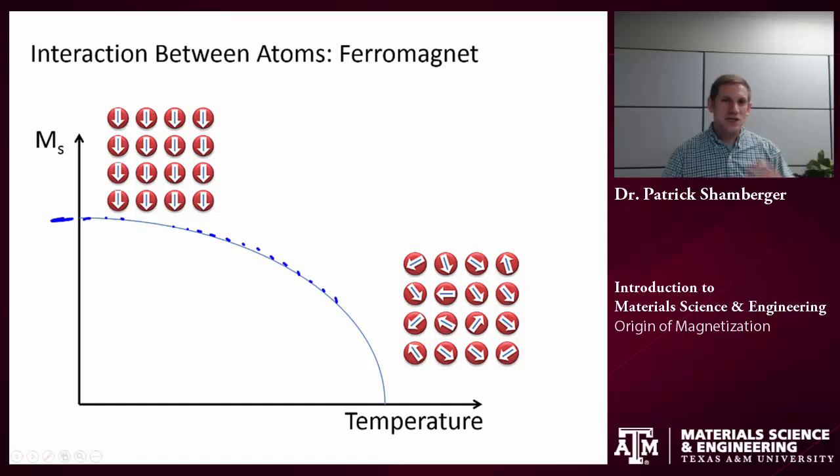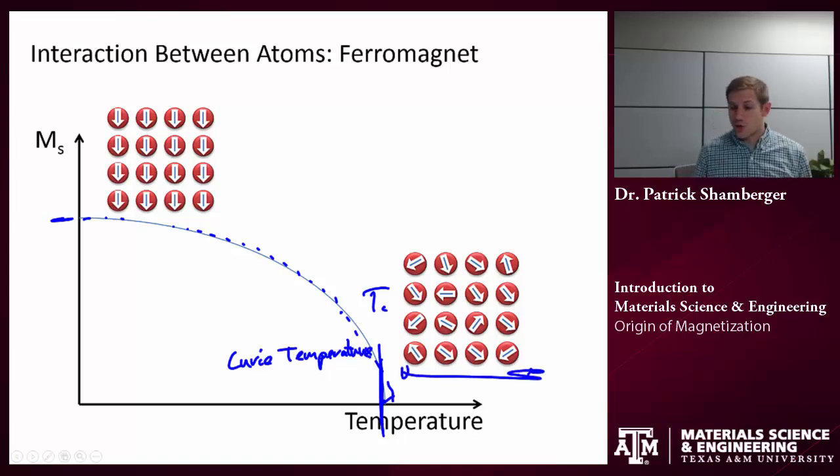So I'm putting in more thermal energy, the system is becoming more and more disordered. And at some point, and I would call this the Curie temperature, the system is no longer ordered. All of those atomic moments are now going to be free to take different directions. So this is one kind of a transition in magnetic material systems, a transition between a ferromagnet and a paramagnet.